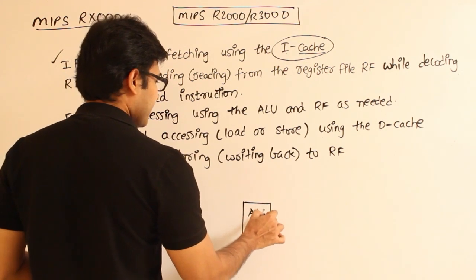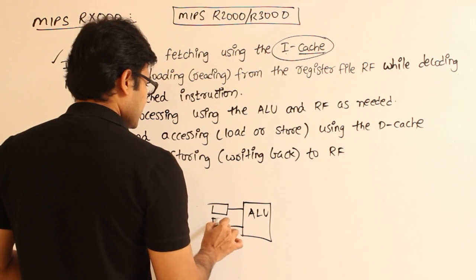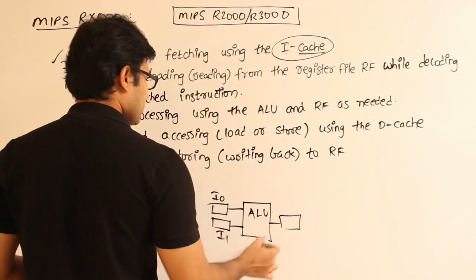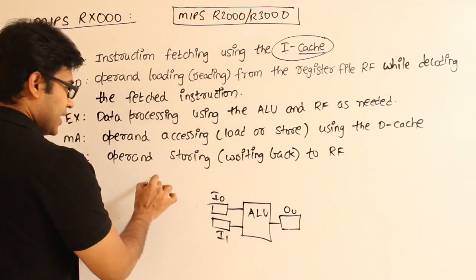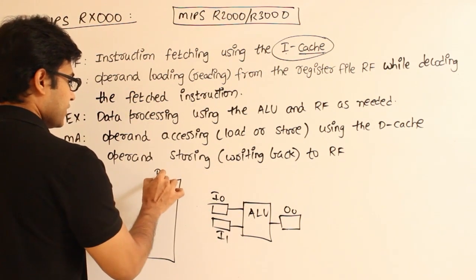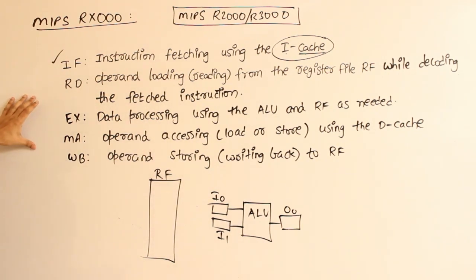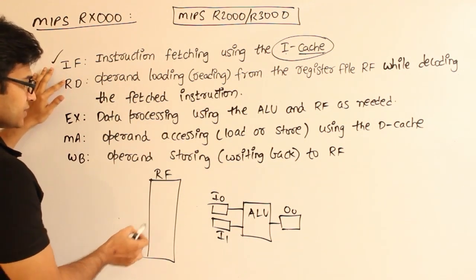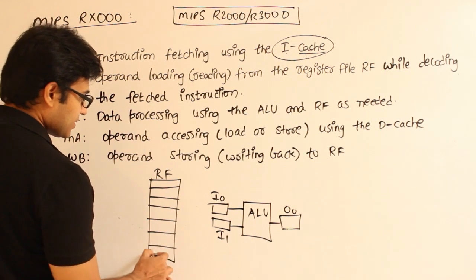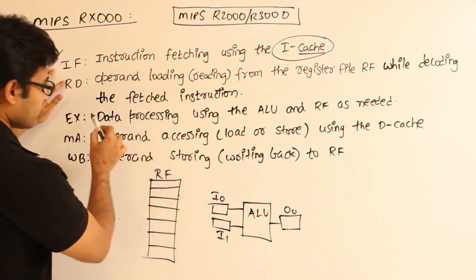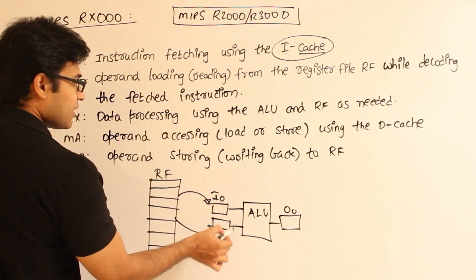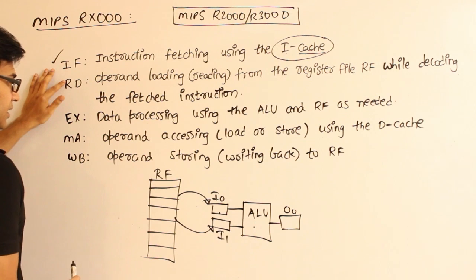The ALU has two inputs — let's call them input one and input two — and the output is always present in an output register. Apart from this, we have a register file. As part of preparation for execution, in the RD phase, the microprocessor loads the appropriate operands from the register file into these two input registers so they are ready during the execution phase.